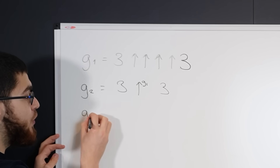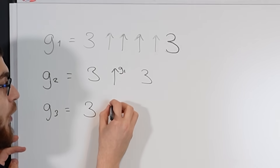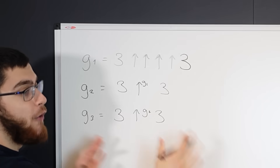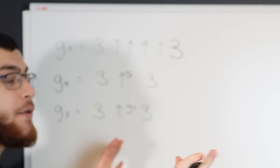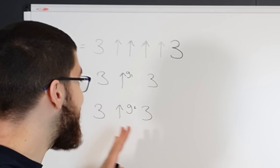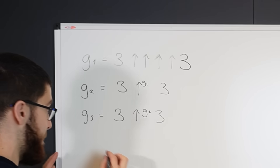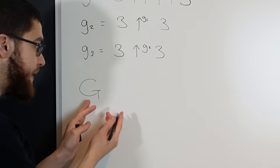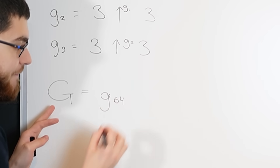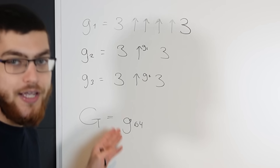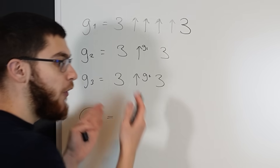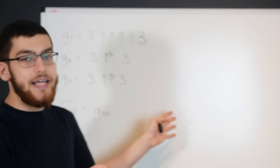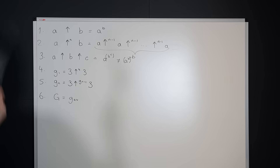G3 is 3 followed by G2 number of arrows followed by a 3, which is even more unimaginably large. Graham's number, sometimes noted as G or big G, is G64 — the 64th iteration of this process. It might as well be infinity.